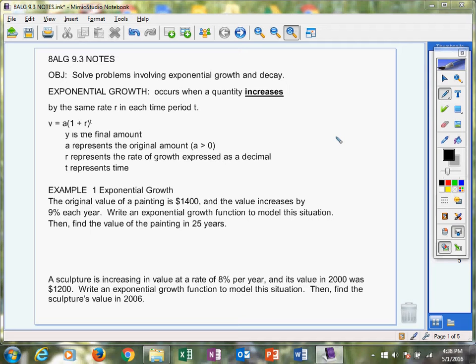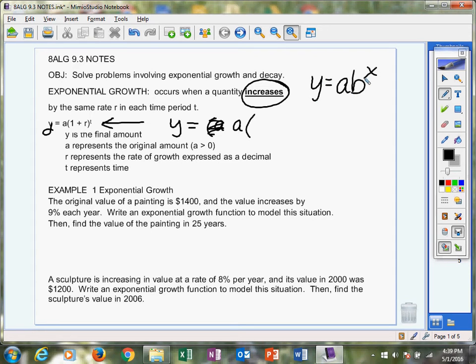Exponential growth occurs when a quantity increases. So go ahead and circle that word - that's going to be very important. And the formula we're going to use is right here: y equals a times b to the x power. A is still your starting amount.